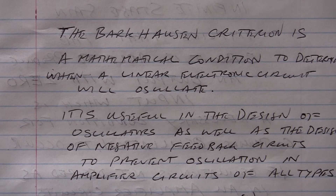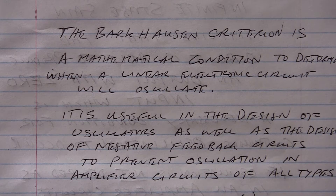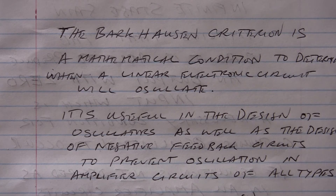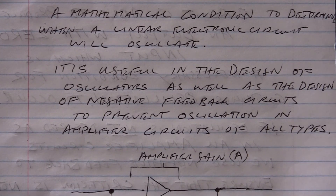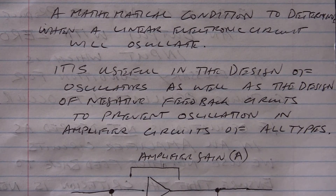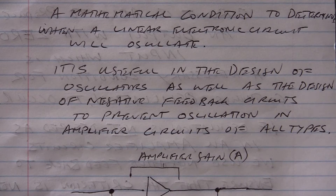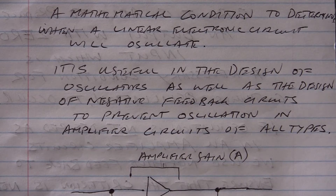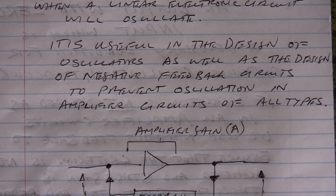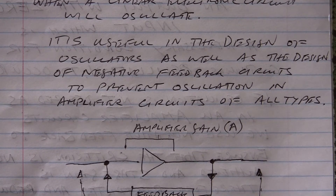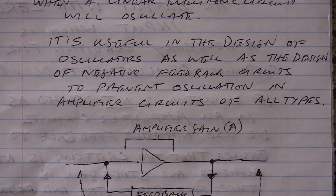The Barkhausen criterion is a mathematical condition to determine when a linear electronic circuit will oscillate. It is useful in the design of oscillators as well as the design of negative feedback circuits, which are used to prevent oscillation in amplifier circuits of all types.